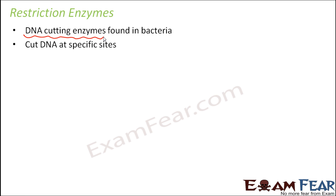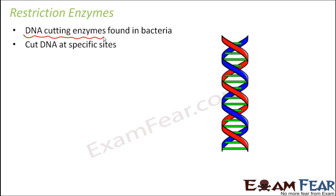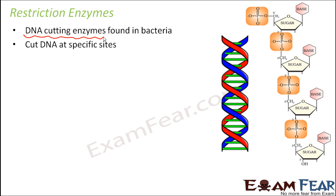They cut DNA at specific sites. Now what do we mean when we say that they cut DNA? If you remember the structure of DNA, it is nothing but a double-stranded structure. So when I say that it needs to be cut at specific sites, what actually are we cutting? This is how the double-stranded structure looks like. DNA is nothing but a polynucleotide — a polymer made up of nucleotide units. One nucleotide consists of a sugar, a base, and a phosphate group.